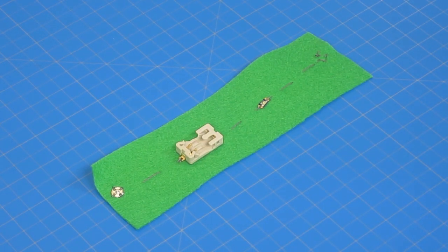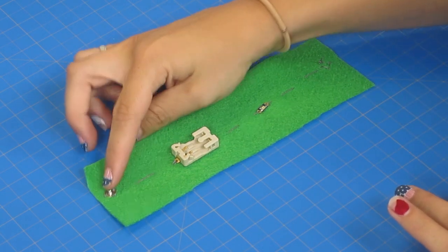Here's our basic layout for our bracelet. The outie snap, the battery holder, and the LED on one side and the innie snap on the other.